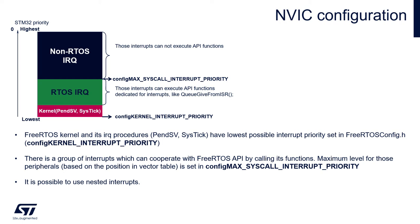A few words about the practical implementation within STM32 lines. The lowest NVIC interrupt priority within Cortex-M0 and M0+ based devices — for example STM32F0, G0, or L0 — is set to 3. The lowest NVIC interrupt priority for Cortex-M3, M4, and M7 devices — such as STM32F1, F2, F3, F4, F7, H7, and low-power lines like L1 and L4 — is set to 15.